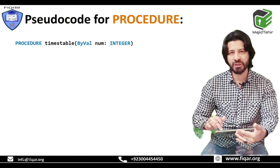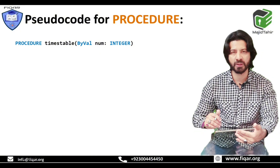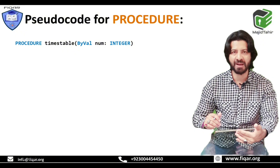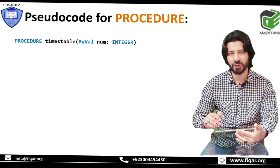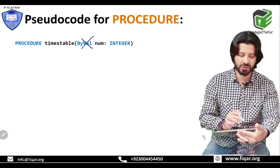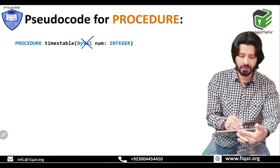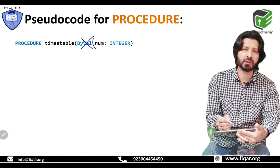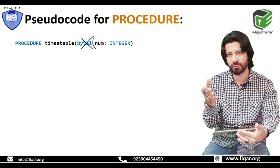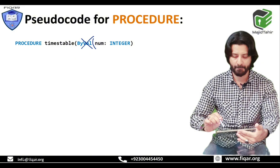Now we are going to see the procedure pseudocode. We declare a procedure with the keyword PROCEDURE. For example, we are declaring a procedure with the name TimesTable and the parameter is by val num with data type integer. For an O level student, they can simply write PROCEDURE TimesTable with the parameter num and its data type. AS level students sometimes have to give by val or by ref.